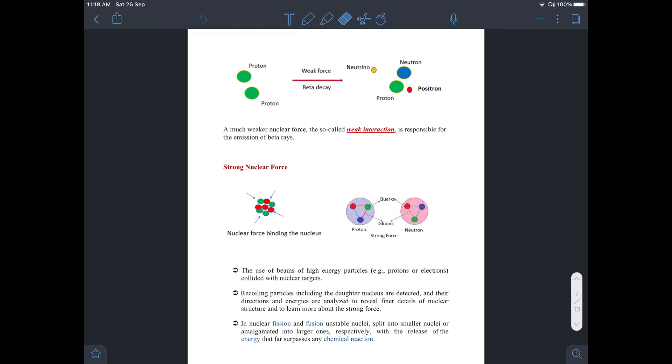In order to learn more about the strong forces and the nucleus structure, we make use of the beams of high-energy particles which are collided with the target nuclei. The recoiling particles, including the daughter nucleus, are detected and their directions and energies are analyzed. We also carry out the nuclear fission fusion, which is basically splitting into smaller nuclei or amalgamation into a larger one respectively, with the release of energy that surpasses any chemical reaction.